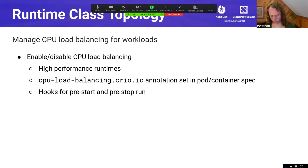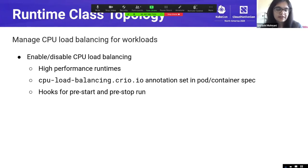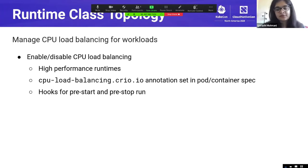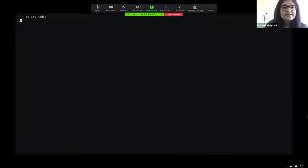We can use the runtime class topology as well as pod annotations to disable CPU load balancing for certain containers using a high-performance runtime. A pre-start hook disables load balancing on the CPUs specified in the pod spec, and a pre-stop hook re-enables load balancing on those CPUs once the pod is about to stop. This is helpful in workloads where the expense of context switching cannot be tolerated.